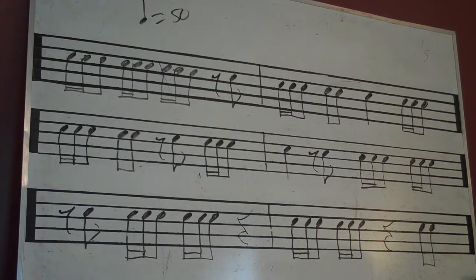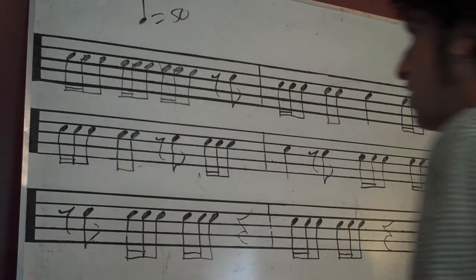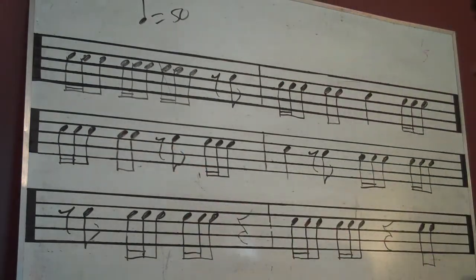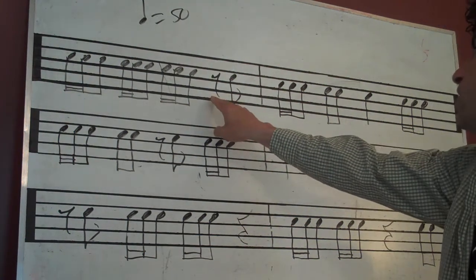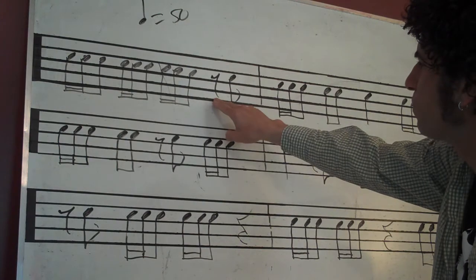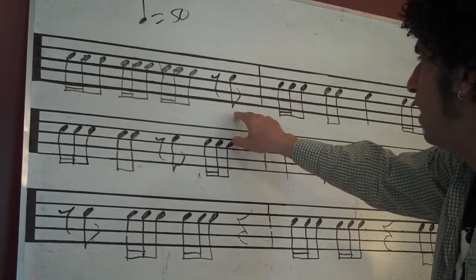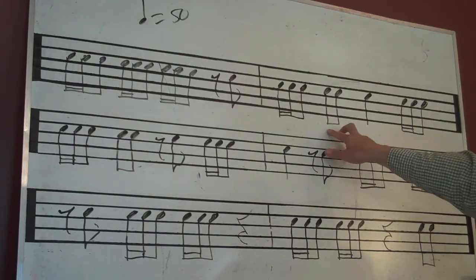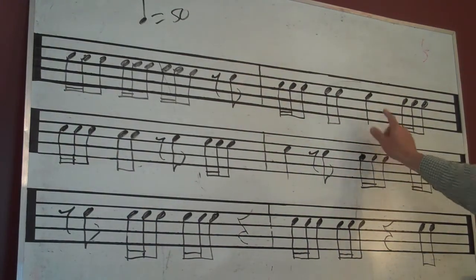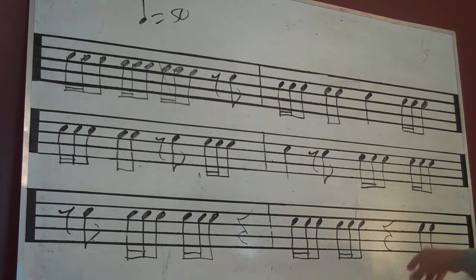So we are counting this rhythm, two sixteenth notes followed by an eighth note. We've added one more little rhythm here in this exercise. We've added eighth rests and eighth note followed by the eighth rests, so the ands, or the upbeats. We also have eighth notes, quarter notes, quarter rests, and these eighth rests, so we are going to count this rhythm.